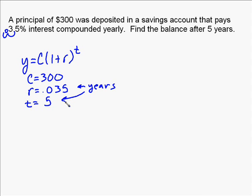So we have y equals c, the principle, times 1 plus r. We call that the factor that you're going to be multiplying by. And then you raise that to the t power. However many times you need to multiply that by the 300. That's the way the exponent works.